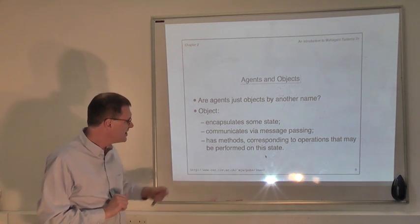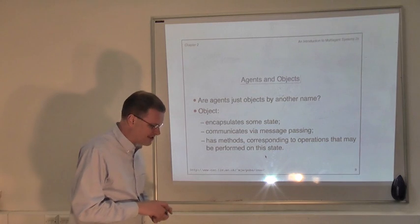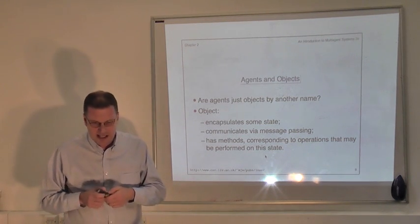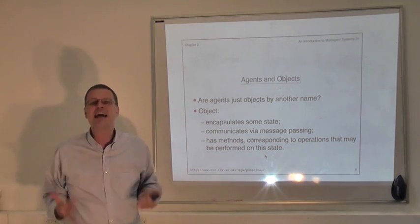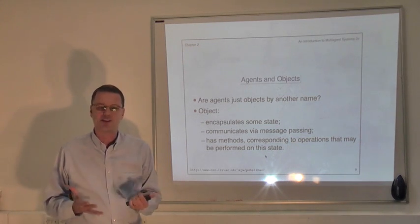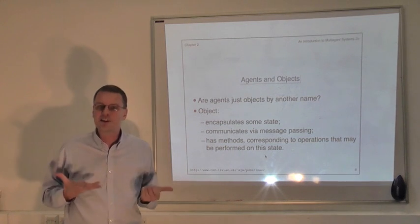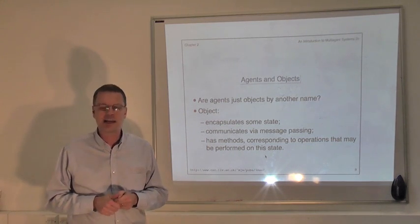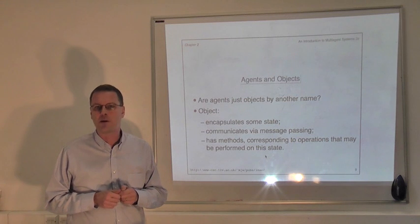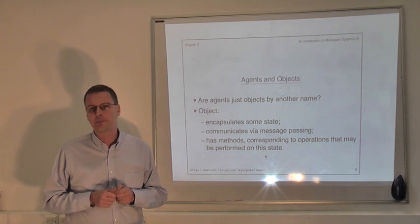The third notion in object-oriented programming is the idea that agents can do things — they have some methods. We can think of those methods, the interface of the object, as being the actions that the object can perform.